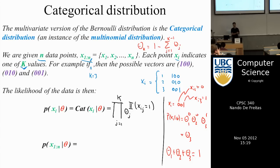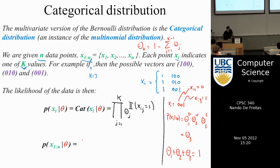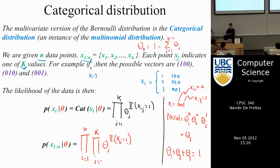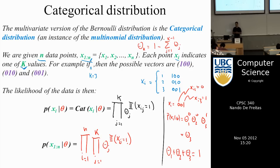The categorical distribution asks: what is the probability that you belong to each of the categories? For example, what is the probability that you're a Republican or a Democrat? When we have several IID data points, we multiply them to get the likelihood. Once I have a likelihood, I can compute theta by taking the log, differentiating, and equating to zero — but I'll do that maximum likelihood estimate in the next class.